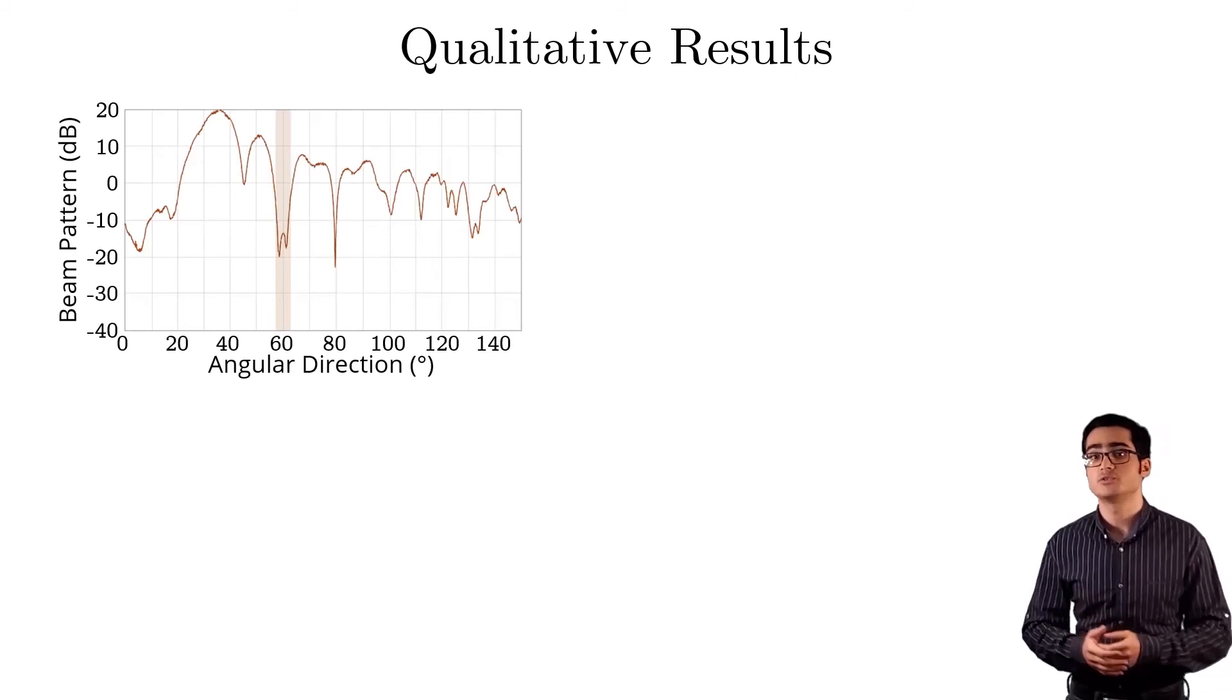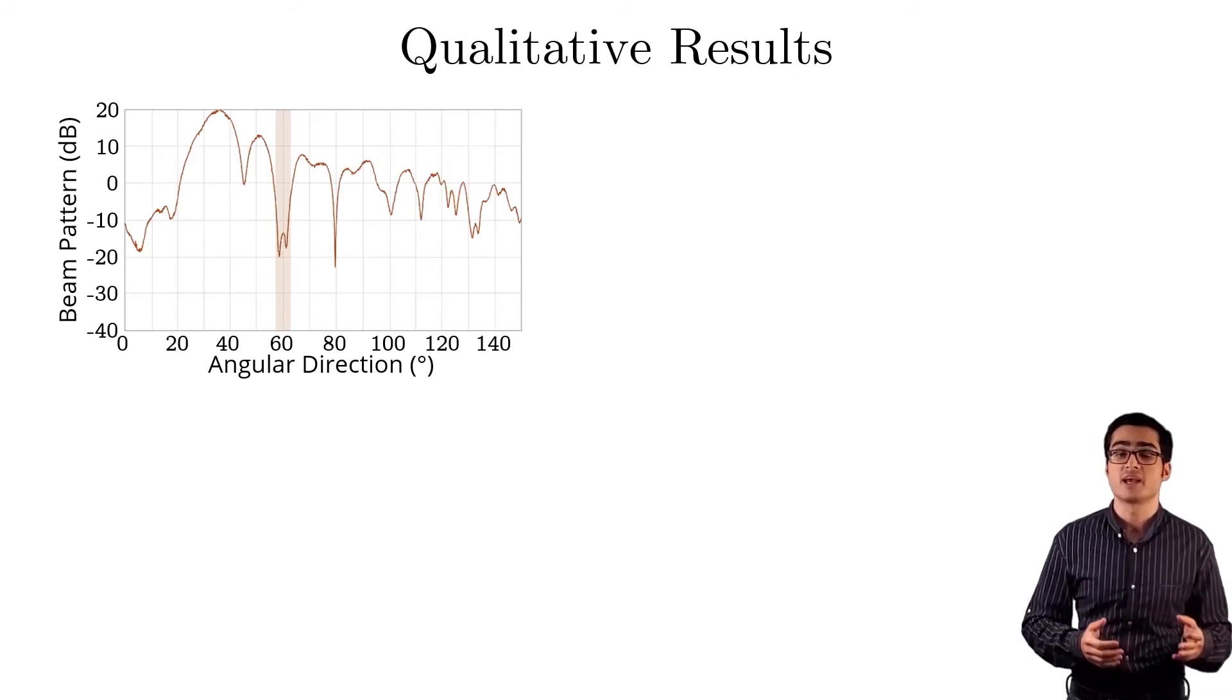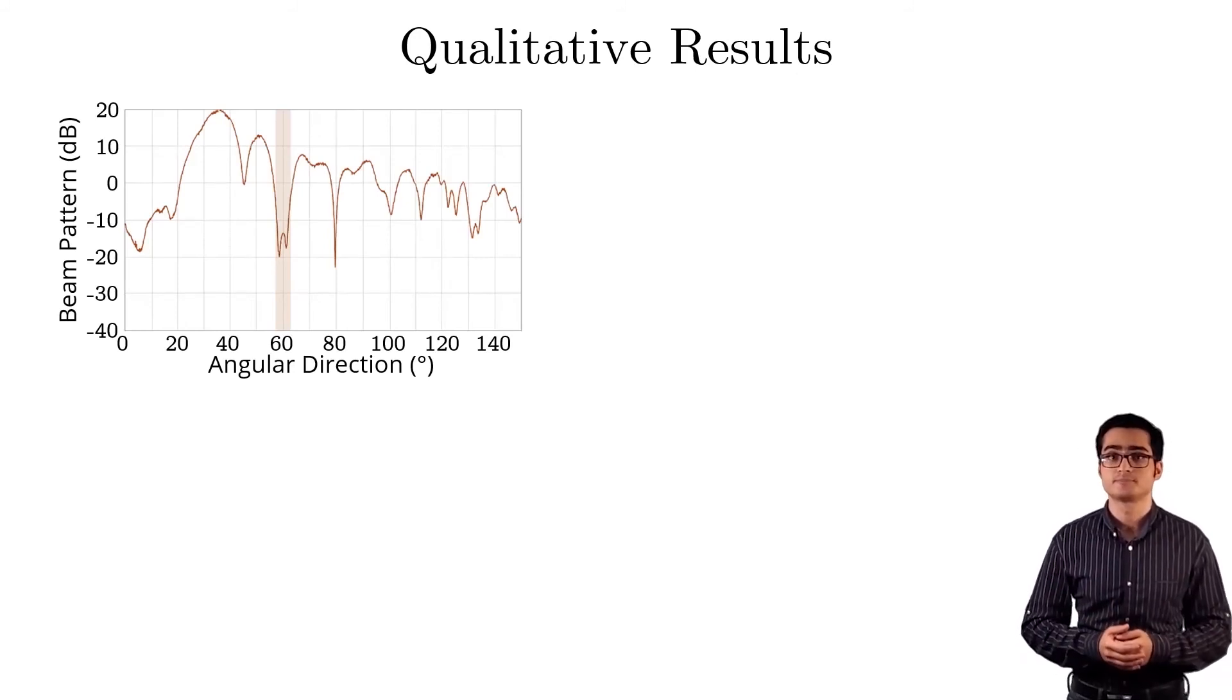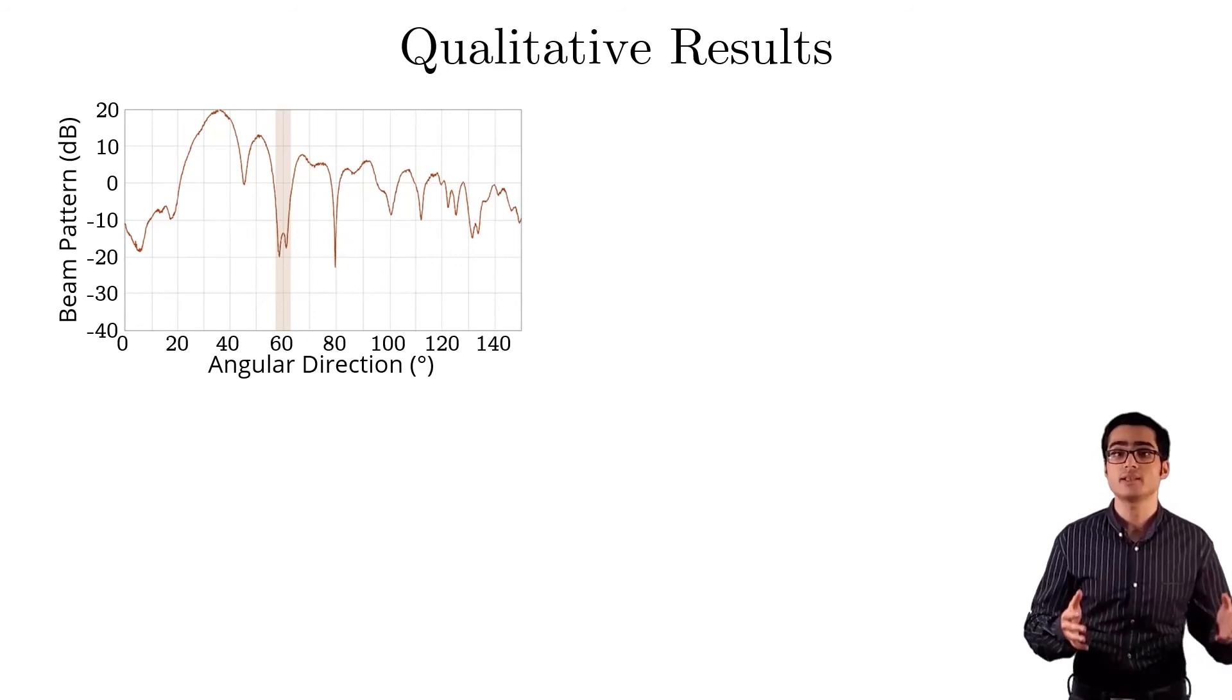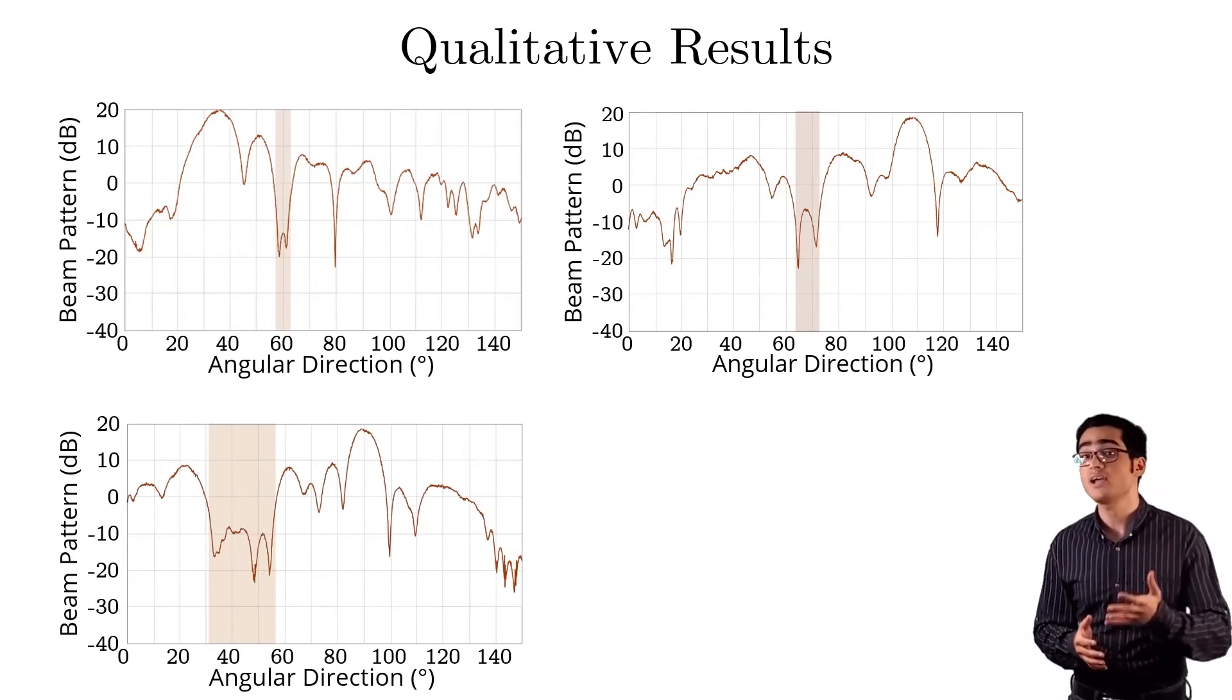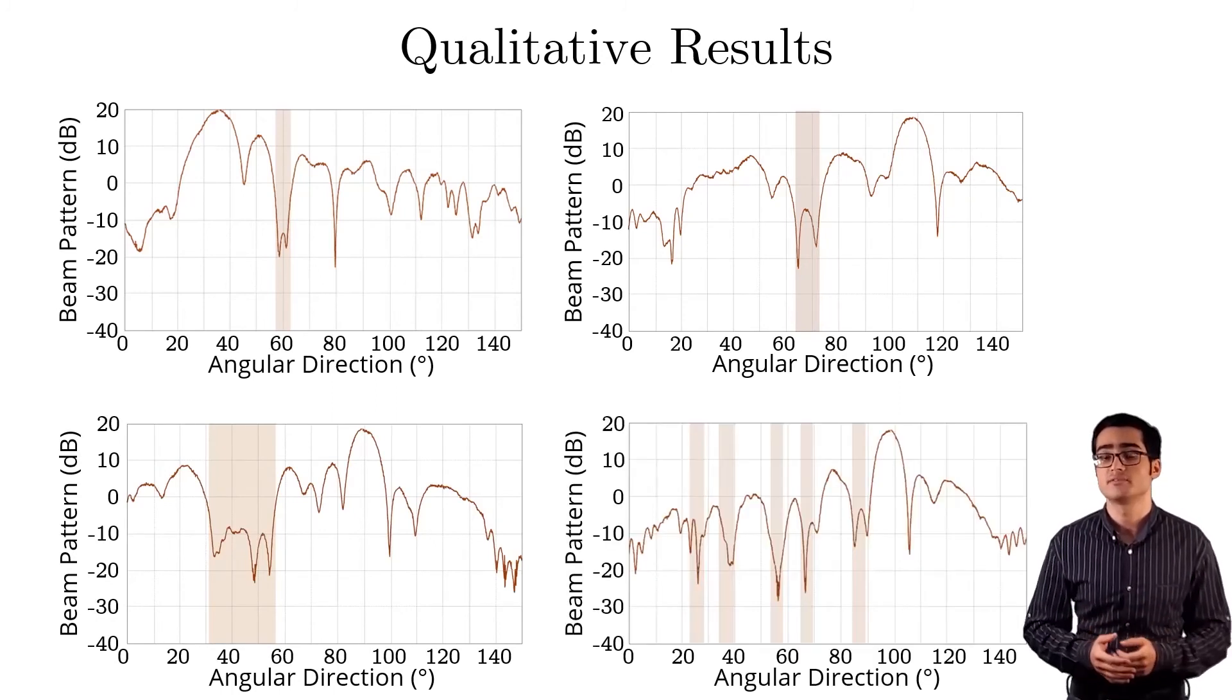Let me start by showing you some qualitative results of the beam patterns and nulls that Nullify can create on real hardware. In the first result, you can see a narrow null along 60 degrees, while the main lobe is preserved at 35 degrees. Next, we see how Nullify is also able to create wide nulls, as well as up to five nulls, in the case of multiple interferers.